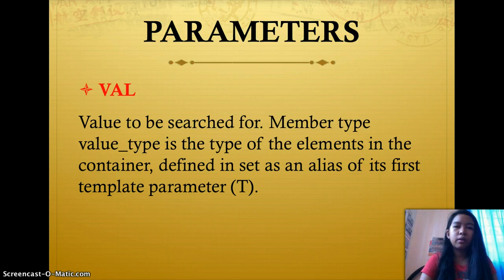Parameters: the parameter used is val or value to be searched for. Member type value_type is the type of the elements in the container, defined in set as an alias of its first template parameter.